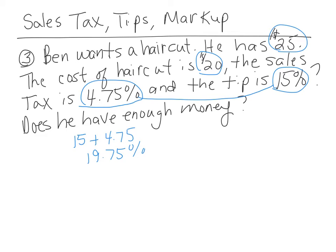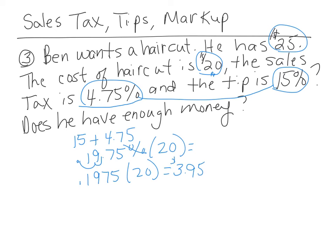So I'm going to be spending 19.75% above the $20. If I take that total percentage and multiply it times the cost of the haircut, which is $20, I get the additional cost. Let's divide by 100, so I get 0.1975 times 20, and I get $3.95. That is the cost of the tip and the tax.